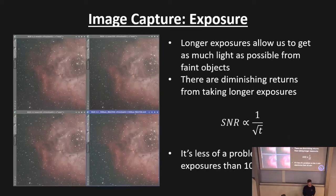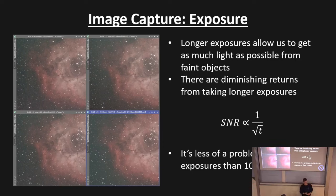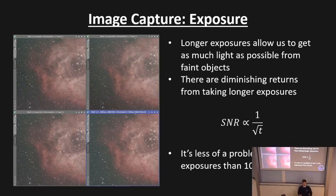Longer exposures allow us to get as much light as possible from faint objects, increasing our signal-to-noise ratio and giving us better, more detailed images. However, there are diminishing returns from taking longer single exposures — the signal-to-noise ratio improves as the square root of one over time, so the first minute of exposure is much more important than the next five or ten minutes. So we get diminishing returns from a single long exposure rather than lots of shorter ones that we can combine.